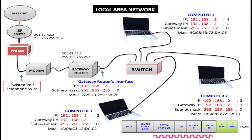In this video we're going to look at how data is transmitted from the network interface card assigned to each computer to this local area network, and the role played by MAC addresses and IP addresses in accomplishing this. We're also going to look at how the gateway router is used to get internet access.